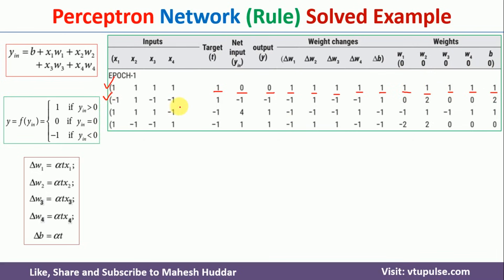Next we give the second input (-1,1,-1,-1) with target 1. Using the updated weights, the net input y_in = -1. Since -1 < 0, the output is -1, which does not match the target of 1. So we calculate the weight updates again. Δw1 = -1, so w1_new = 1 + (-1) = 0. Δw2 = 1, so w2_new = 1 + 1 = 2. We calculate all remaining delta terms and update accordingly.